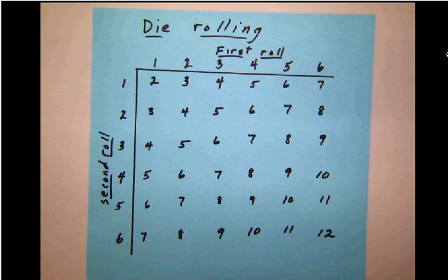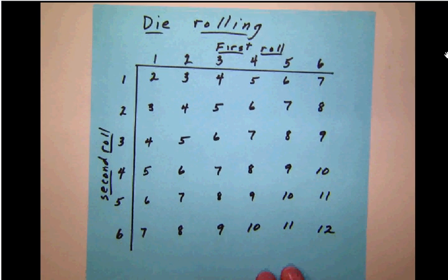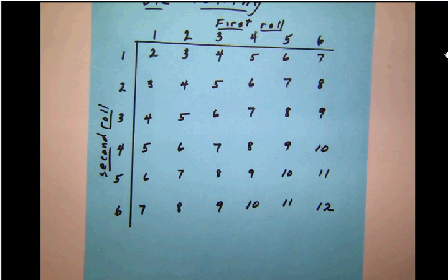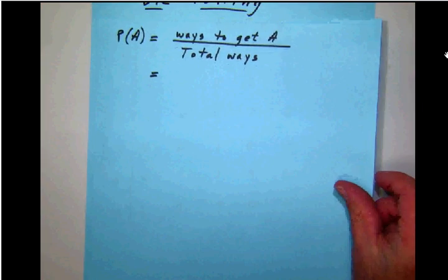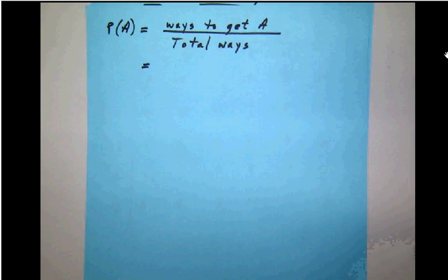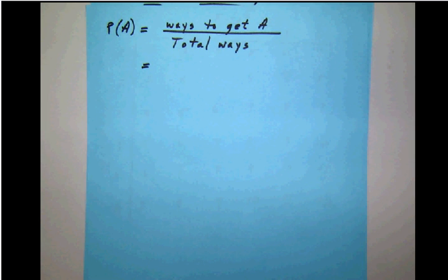Now they're going to ask us particular questions about this configuration. One thing that we want to notice is how we do a basic probability calculation. First of all, the probability of anything you want to calculate is always going to make that a fraction. The top of the fraction is going to be the number of ways to get A—that stands for whatever it is that you want—divided by the total number of ways.